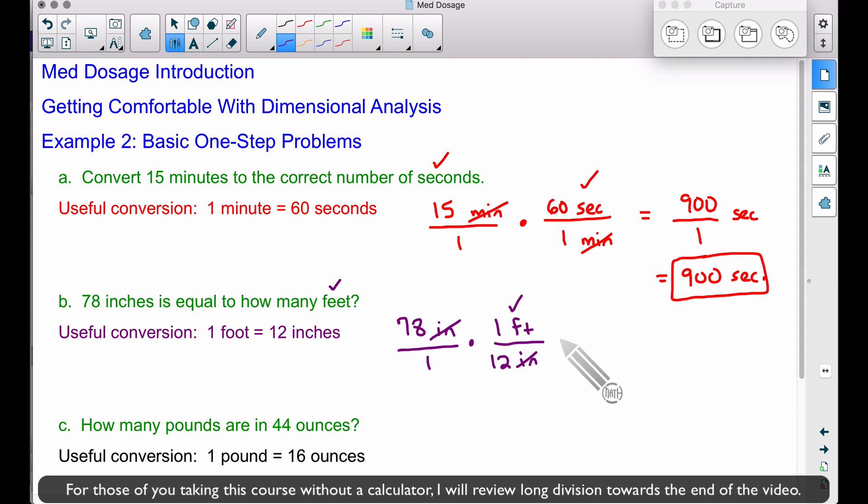Let's multiply the two fractions. 78 times 1 is 78, and 1 times 12 is 12. If we take 78 and divide it by 12, you can use a calculator or do long division. 78 divided by 12 gives you 6.5, and this is in feet since that's the only word we have left. Don't forget your unit of measurement.